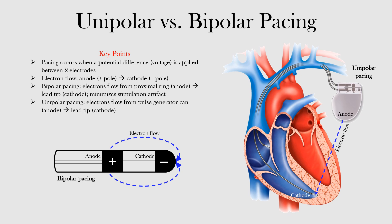A few main things to be aware of: electrons flow from the anode — the positive pole — to the cathode. Here's your anode, the positive end, and this is your cathode, the negative end. Electrons flow in this direction.